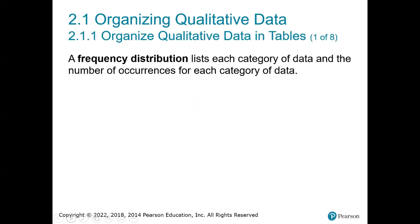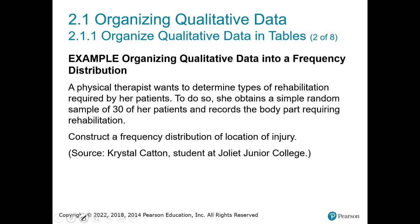The first thing we're going to do is create what is called a frequency distribution. A frequency distribution lists each category of data and then the number of times it occurs.